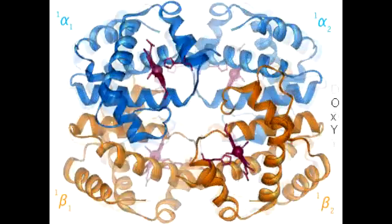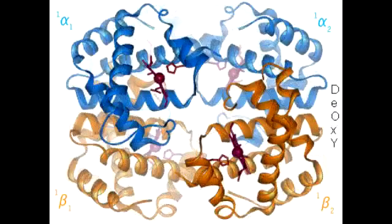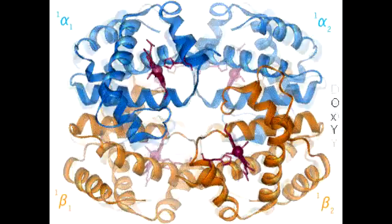Describe the structure of hemoglobin. Hemoglobin is a quaternary structure composed of four polypeptide subunits, which are two alpha and two beta subunits.